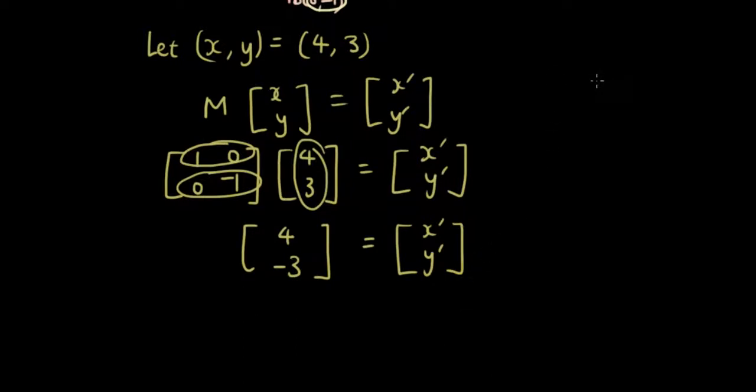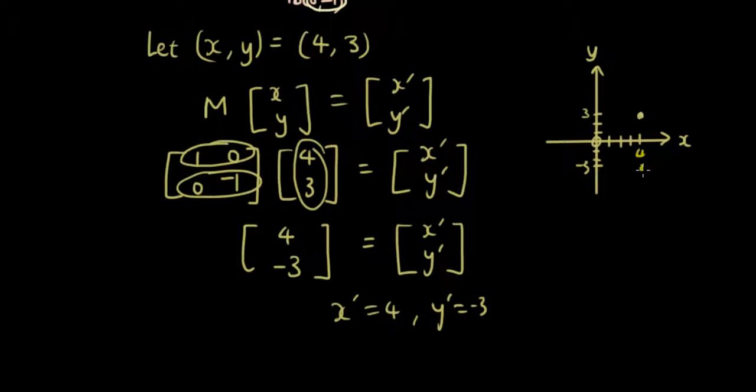Now just confirming that we have done this right. I'm going to draw both points. So my original point is at x is 4, y is 3. So that's this point here. And if I reflect it in the x axis, I get x dash is 4 and y dash is negative 3. So it will be located over here.